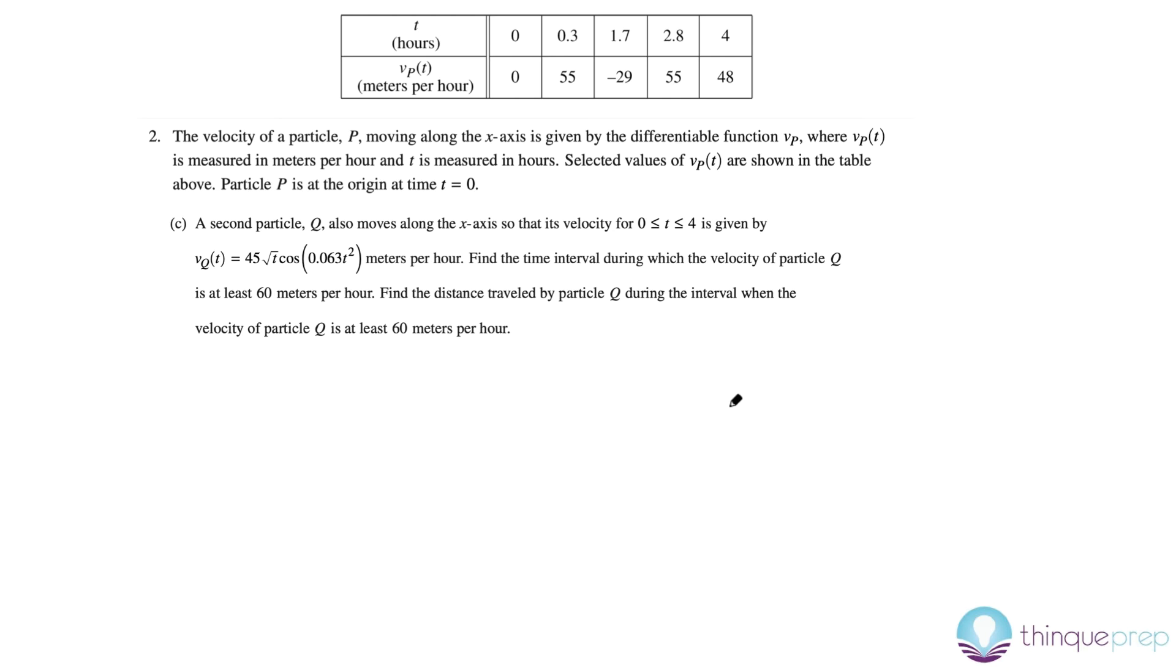So, in part C, we're given a brand new second particle, Q, that moves along this interval, 0 to 4, with this new crazy complicated trig function. And then we're trying to find the time interval during which the particle of Q, the velocity of particle of Q, is at least 60 miles per hour, at least means greater than or equal to. And then we want to find the total distance traveled by particle Q. So, if you think back to total distance, and we kind of did a question like this a second ago, is that the total distance is equal to the absolute value of the velocity along some sort of interval. What's the interval here? Well, we need to find that interval, so we actually can't answer this question yet. So, let's use our calculator to figure out the interval.